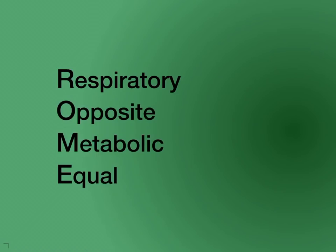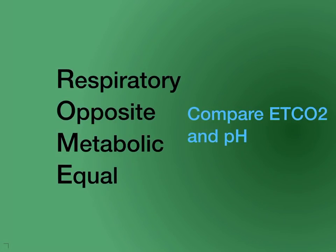Respiratory Opposite Metabolic Equal — how do we use this? We want to compare two levels: the end-tidal CO2 and the pH. In the field, we don't normally draw ABGs, so bicarbonate is typically not a number we'll have readily available. But understanding the concept of respiratory acidosis, alkalosis, and metabolic acidosis and alkalosis is important.